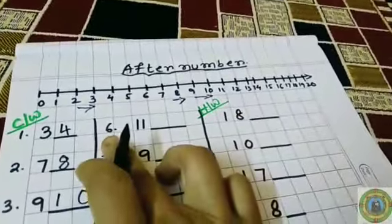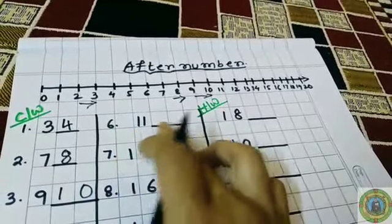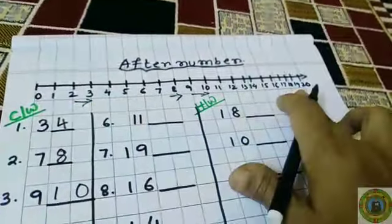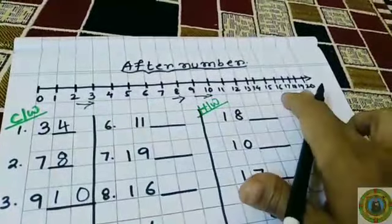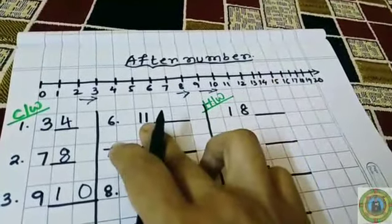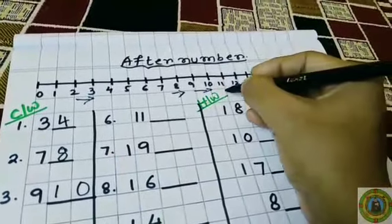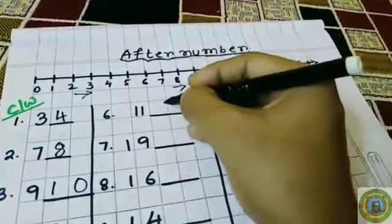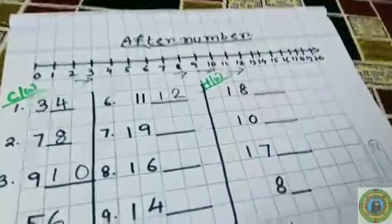Question number 6: What comes after 11? Here I have drawn a number line from 0 to 20. So what comes after 11? The answer is 12. So we have to write 12.